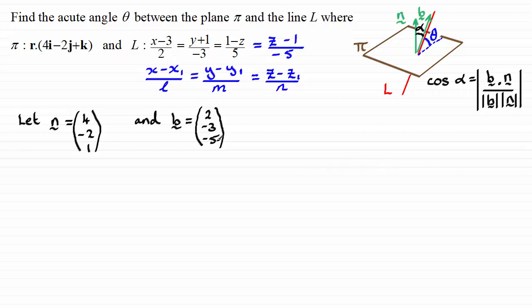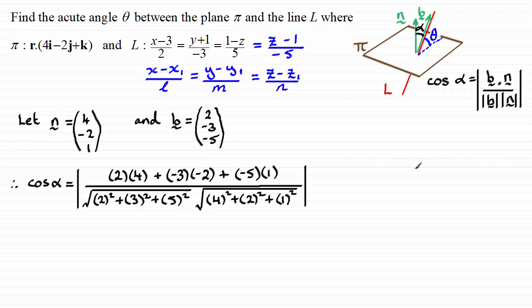So with that, all I need to do now is work out what the cosine of alpha is by using this formula here. And if you do that, then I've done the scalar product here on the top between b and n. Obviously you can do n and b; n·b is the same as b·n. And I've got that result in the numerator here. And we divide it by the magnitude of each vector.